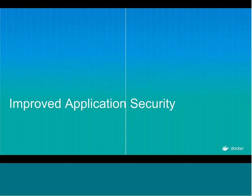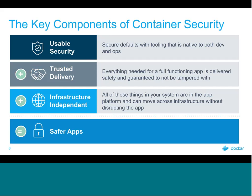Let's talk about improved application security. The key components of container security start with having a usable security system — secure by default, where only permitted users can access a resource, native to both dev and ops. Added to that is trusted delivery: does your application have everything it needs to be fully functional, delivered safely, and guaranteed not to be tampered with? This is where secrets and scanning come in.